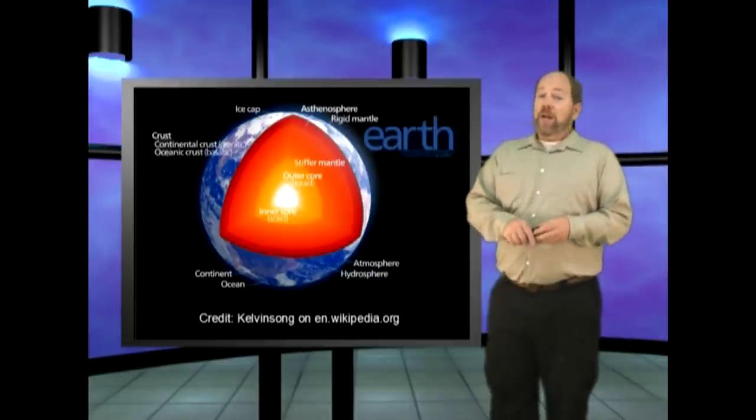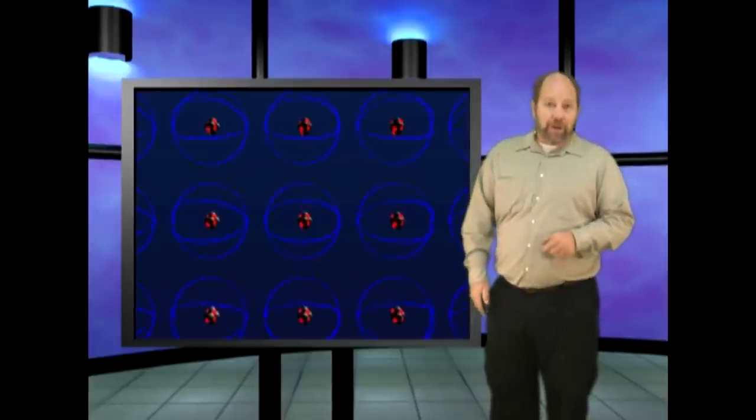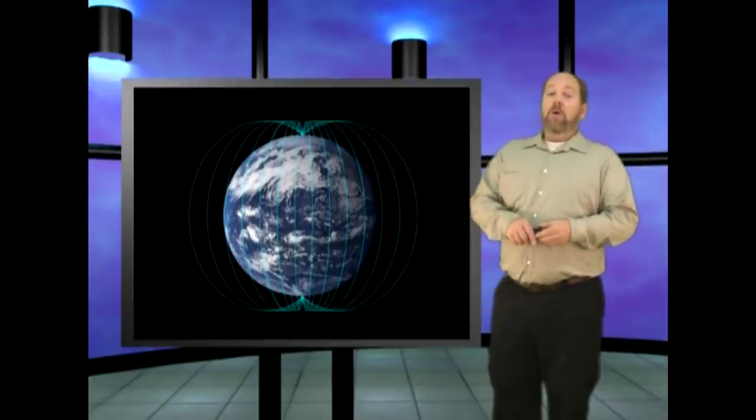The biblical creation explanation, on the other hand, is simple. The planets are young, and when they were first created, the poles on their atoms were aligned, producing the magnetic field. This is why we are seeing magnetic fields in the planets, and why they are weakening. It's all young, just like the Bible says. Stick around, we'll be right back after this short break.